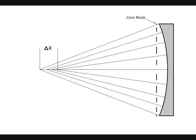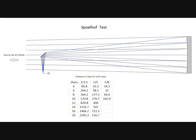There are many null tests, but the absolute simplest one is the Spool-Hoff null. In the Spool-Hoff, the light source is moved a distance away, not at infinity, but far enough away that it approaches infinity.